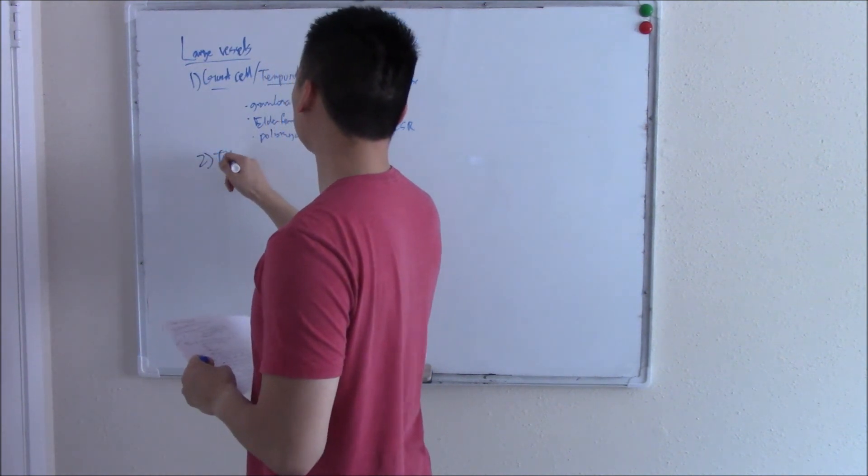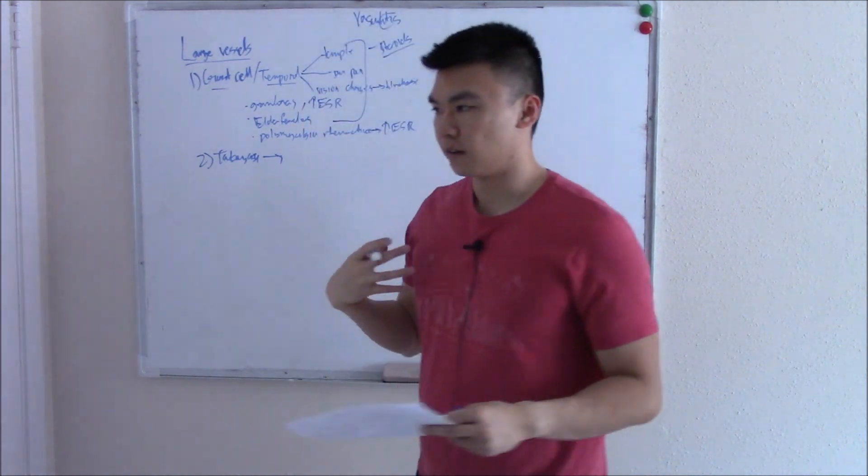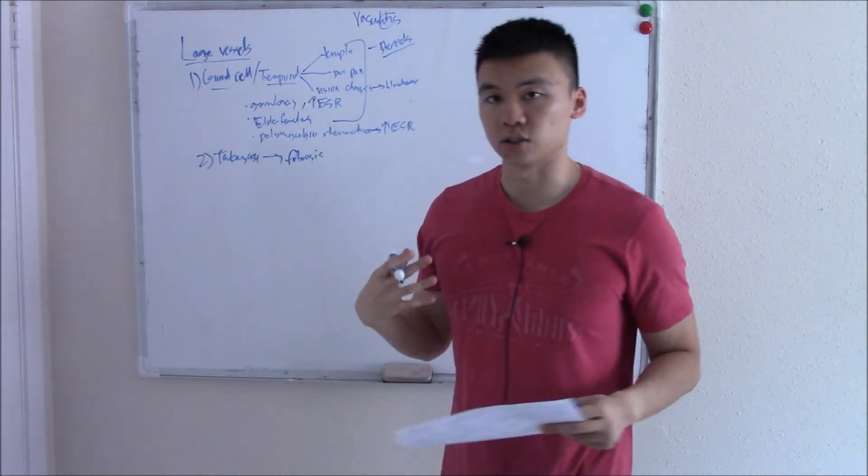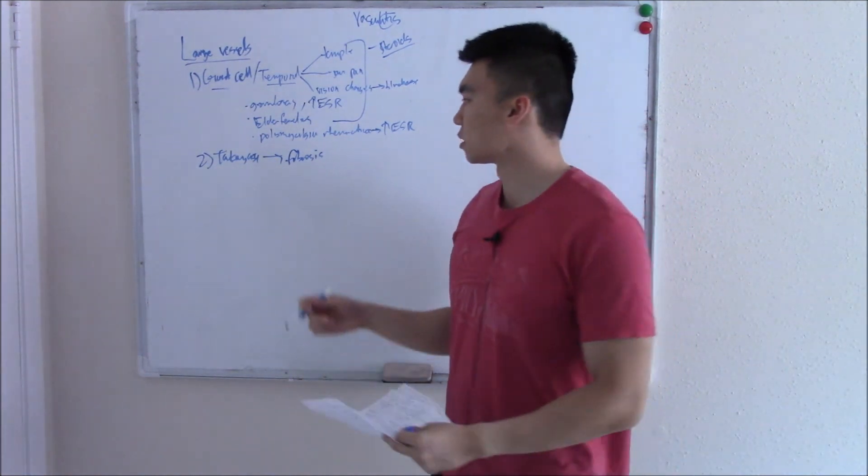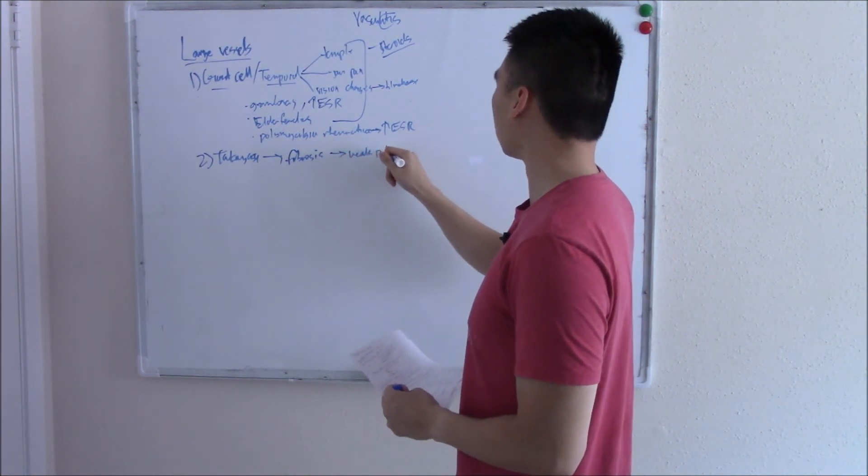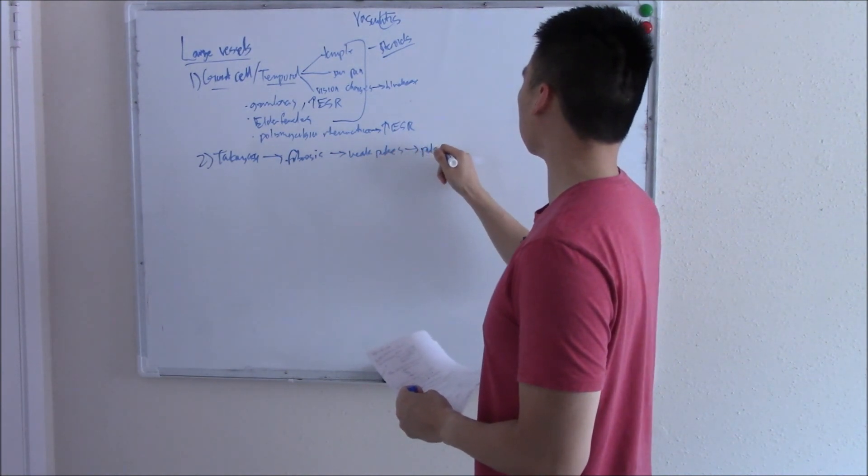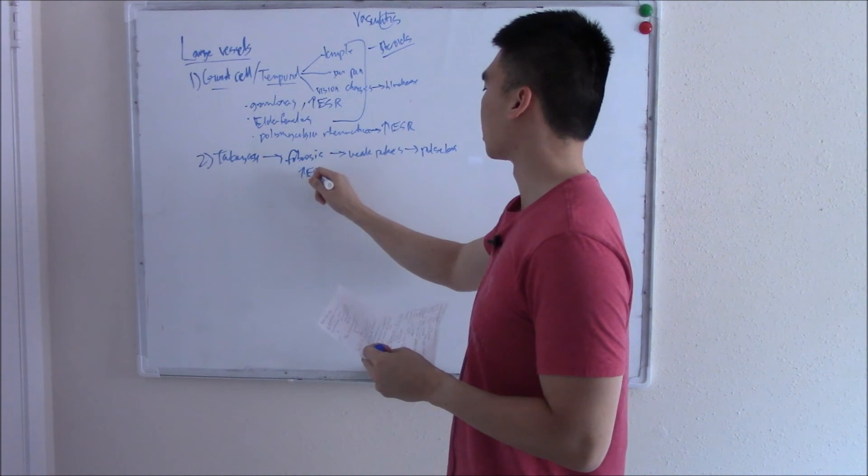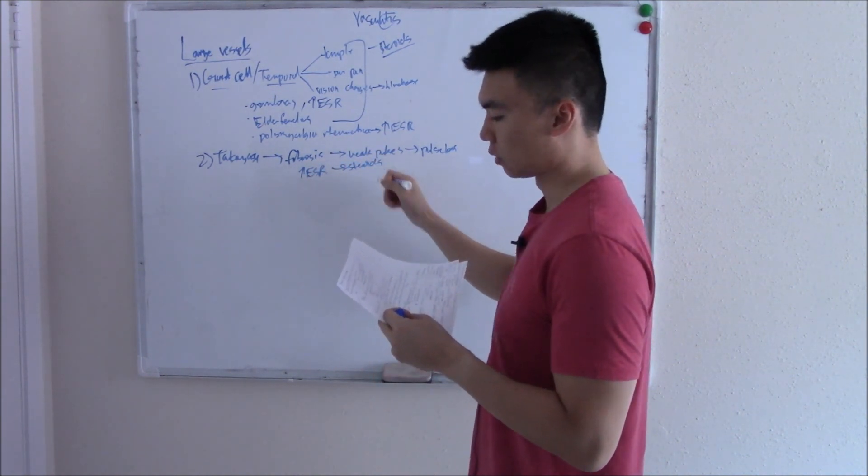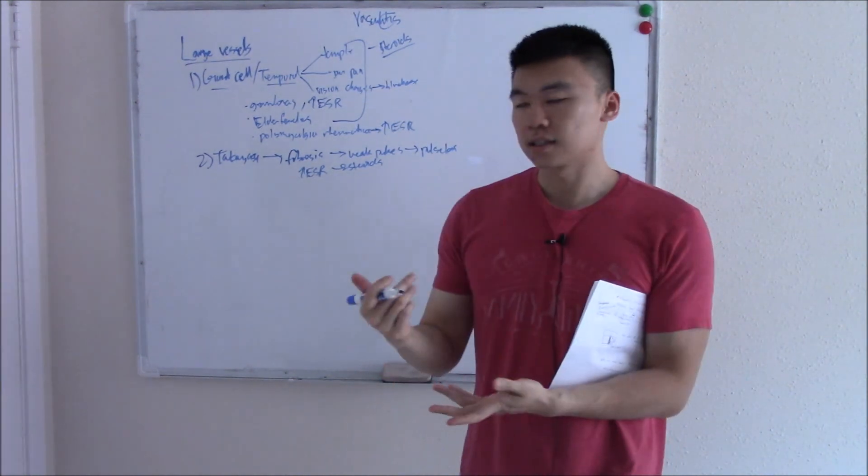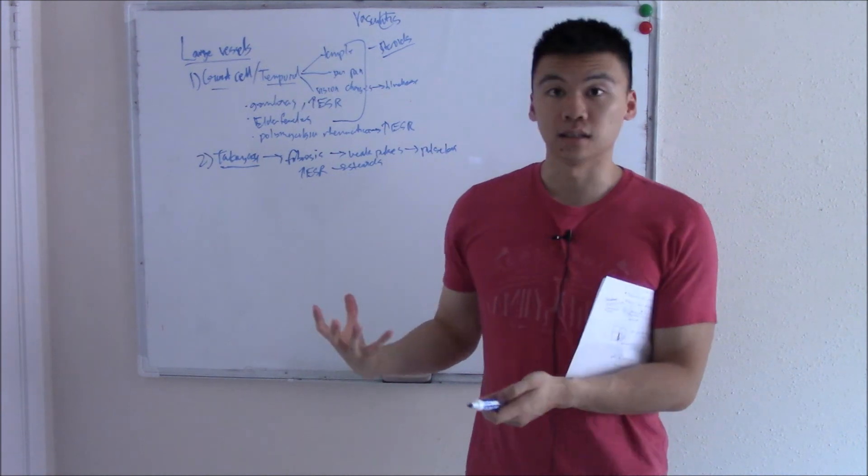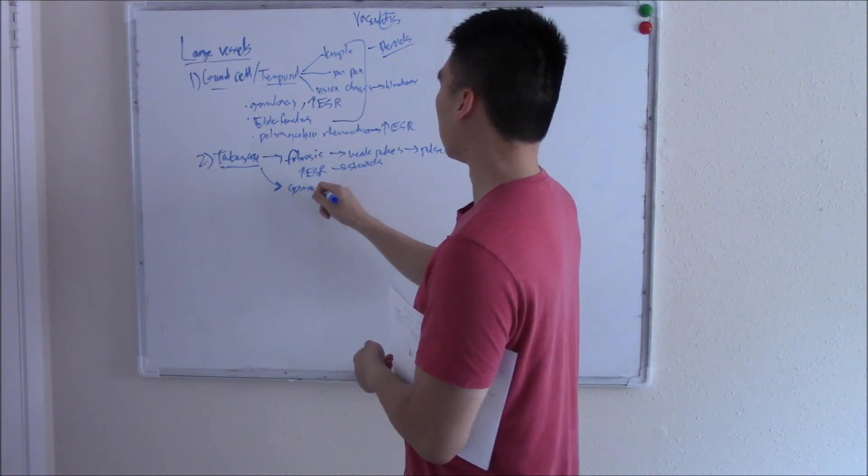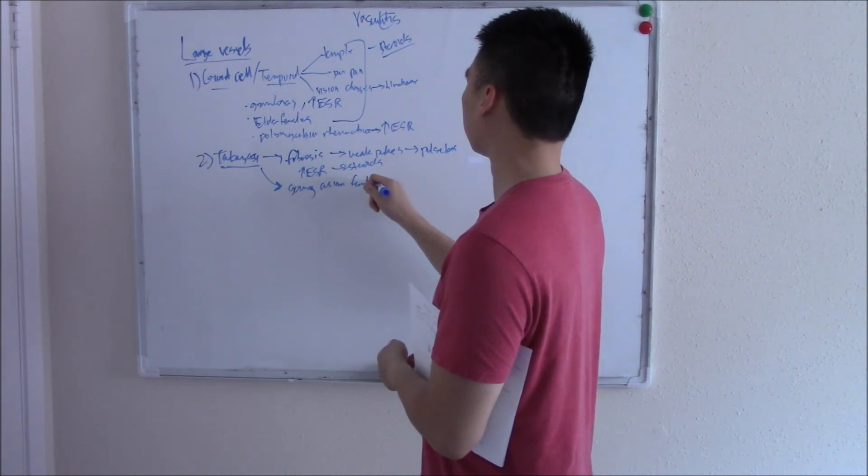Second one is Takayasu. This is inflammation of your aorta. It can cause fibrosis, and when it causes fibrosis, that makes it difficult for the blood to travel. You get low, weak blood pressure and pulses in your arms. Sometimes this disease is called pulseless disease. It'll be very similar to giant cell - you can see the inflammation with increased ESR, treated with steroids. The epidemiology is a little different. Takayasu was first seen in the Japanese population, and clinically it's more commonly seen in young Asian females.